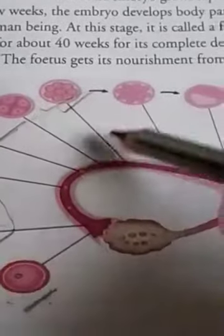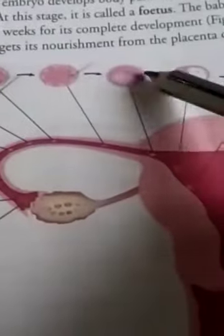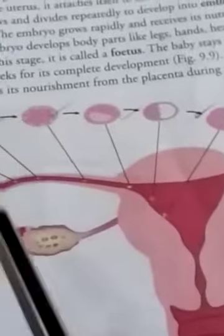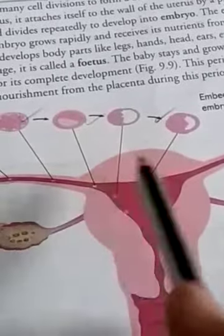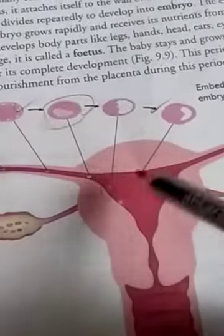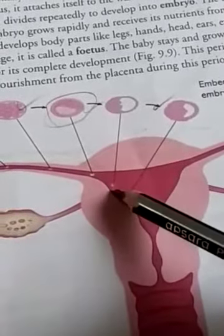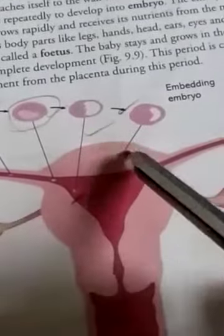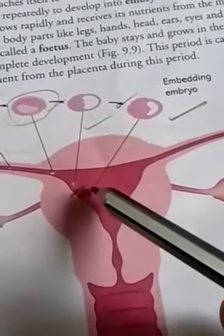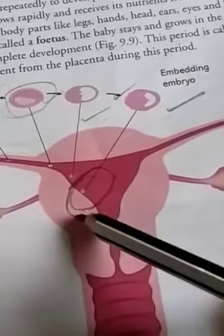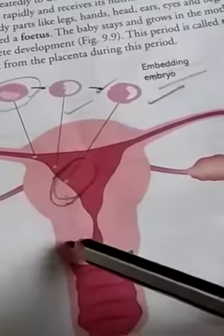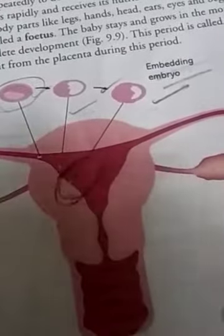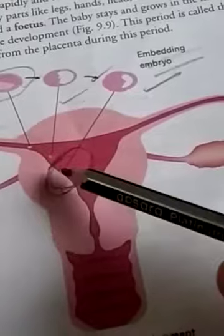The zygote divides into so many cells, and further division is still going on. It forms a ball-like structure. After that, when it enters the uterus, it looks like this structure, and then it is implanted in the wall of the uterus.